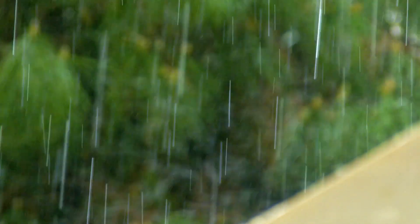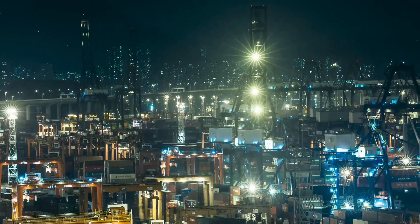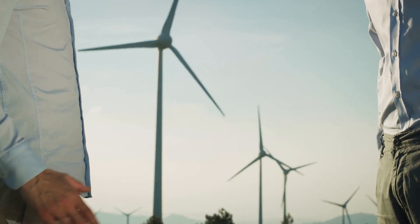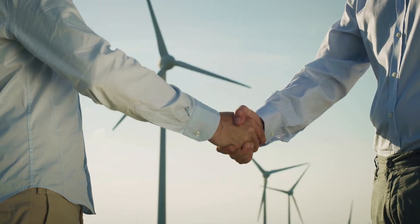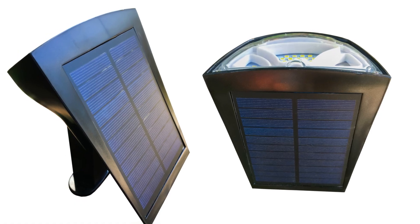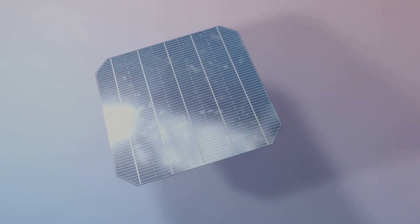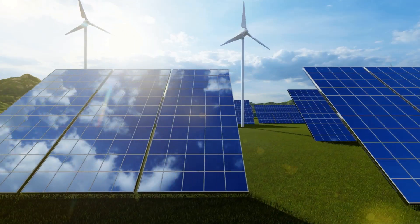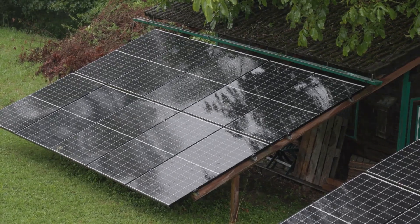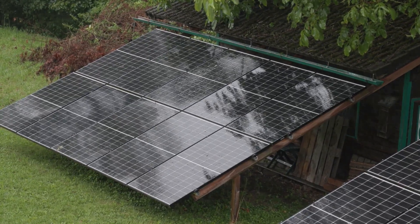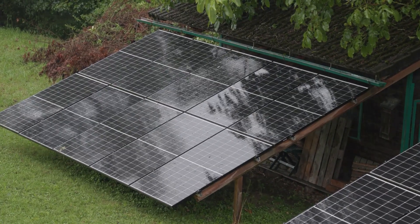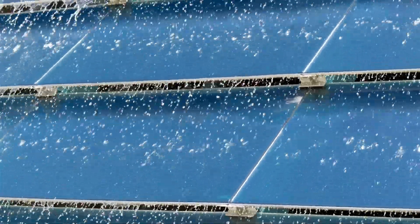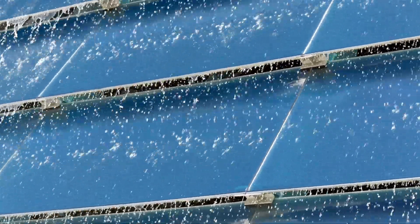So, given these challenges, what is the future of electricity from rain? It's likely not about powering entire cities. Instead, its most promising application is as a partner to existing technologies. The leading idea is the hybrid solar panel. Imagine a transparent TANG layer placed directly on top of a solar cell. On sunny days, the solar panel works normally, but on cloudy rainy days when solar output plummets, the TANG layer comes alive, harvesting energy from the falling raindrops. It turns solar power's biggest weakness, bad weather, into a strength, creating a more consistent all-weather energy source.